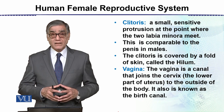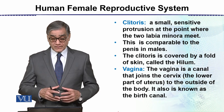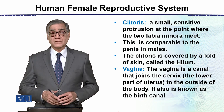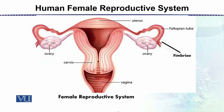The Vagina is a canal that joins the cervix — that is, the lower part of the uterus — to the outside of the body. This is also called the birth canal. The vaginal opening is covered by the Labia Minora and the Labia Majora. The Vagina is the canal which receives the Penis during intercourse, and it is separated from the uterus by the cervix.